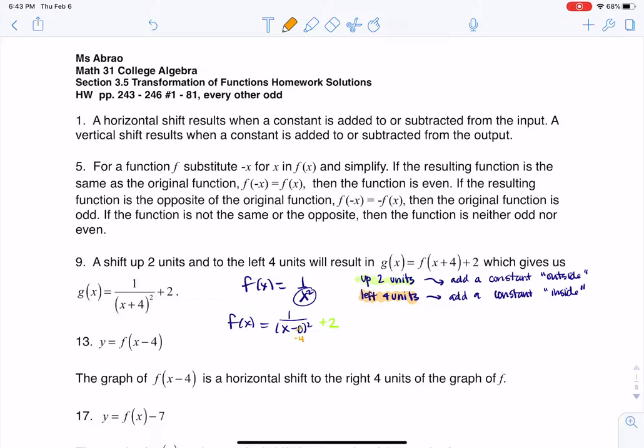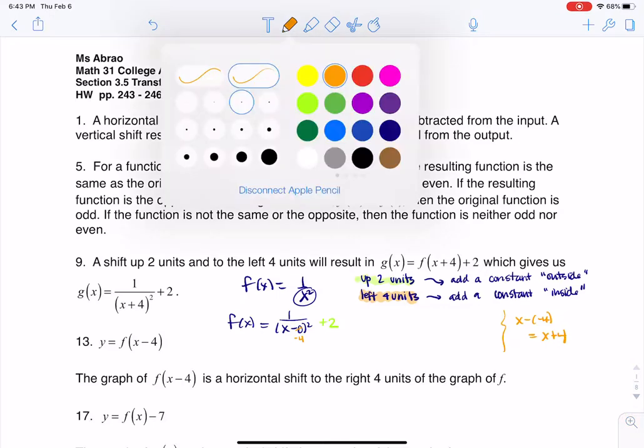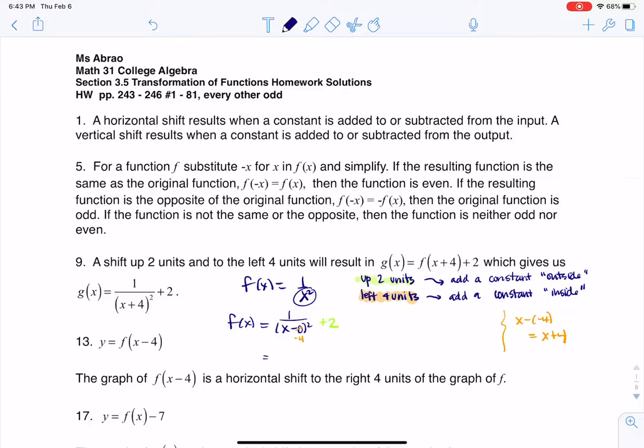But if I simplify that, and I'm just going to put that off to the side here, if you had x minus a negative 4, that would actually turn into x + 4. So when I go to actually simplify my function that I've transformed, I'm looking at 1 over (x + 4) squared plus 2, and that's why you see me writing that over there.